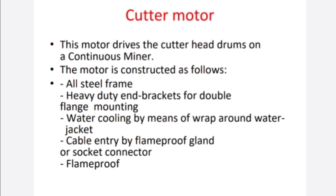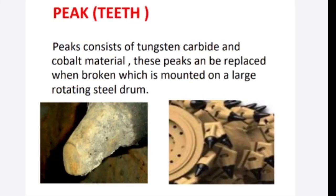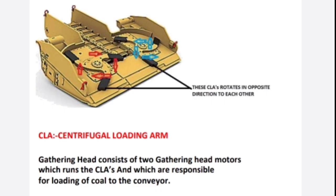The cutter picks or cutting teeth of the continuous miner are made of tungsten carbide for cutting coal and are replaced whenever wear and tear occurs. There is a fine water spray at 12 bar pressure behind the cutting drum for dust control. The gathering arms work on centrifugal loading principles, operating in two opposite directions placed on either side of the chain conveyor.